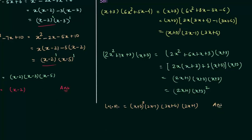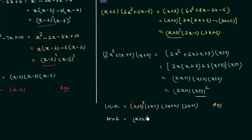Now we calculate the HCF, which is the product of common factors with the least index. Comparing both factorizations, (x + 3) is the only common factor. Its index is 1 in the first polynomial and 2 in the second, so we take the least index, giving HCF = (x + 3). This is all for this presentation. If you have any doubts, you may ask in the comment section.